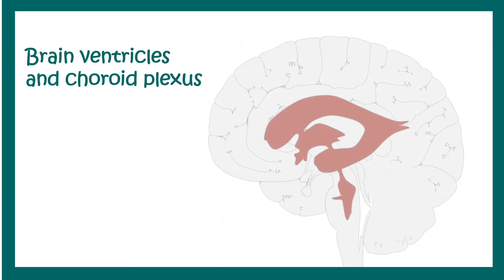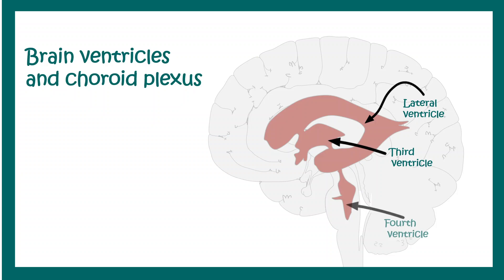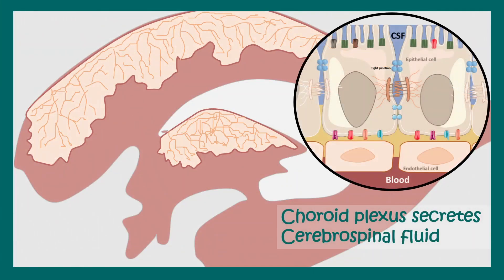These are the brain ventricles and choroid plexus. There are lateral ventricles, a third ventricle, and a fourth ventricle. Lining all of these ventricles is a tissue known as the choroid plexus, which has epithelial cells and is responsible for the secretion of cerebrospinal fluid into the ventricles.